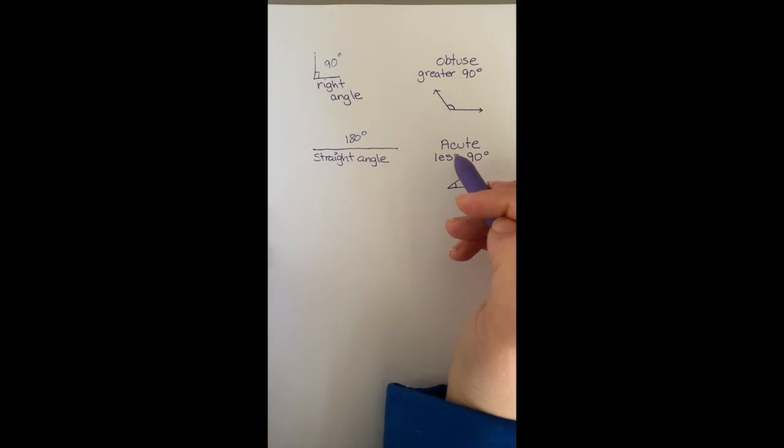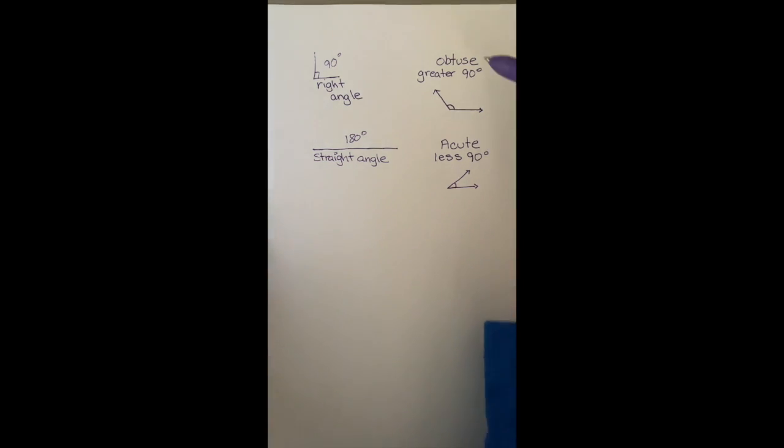And I always remember it because I think acute is a cute angle, meaning that it is small. So that helps me remember the difference between acute and obtuse.